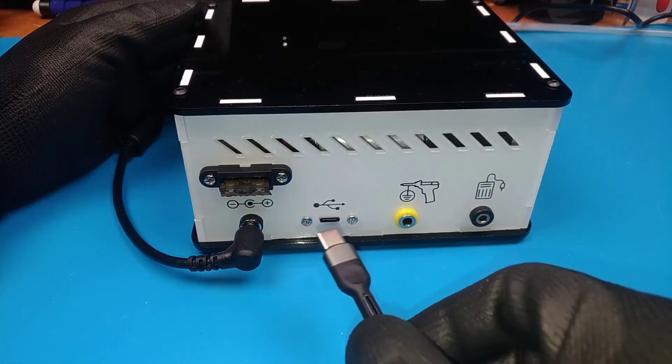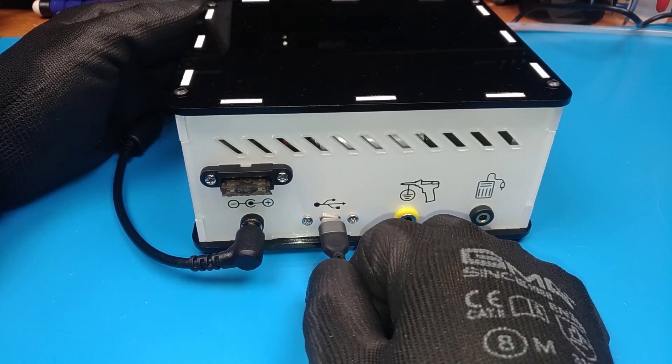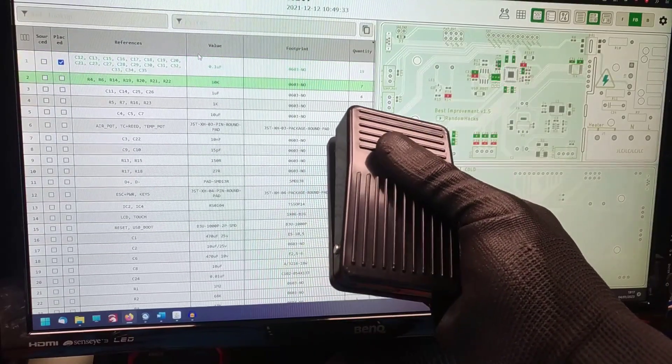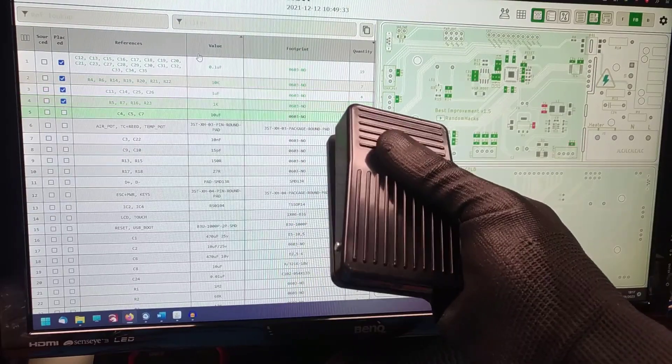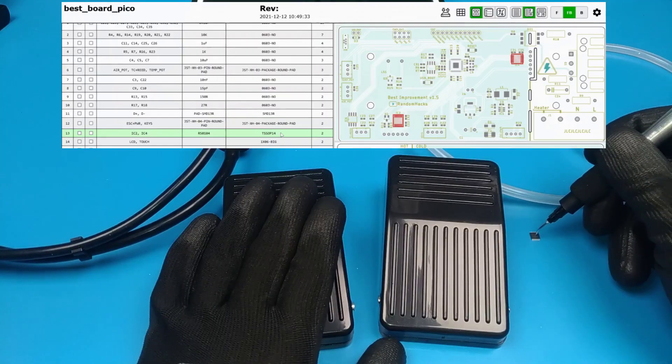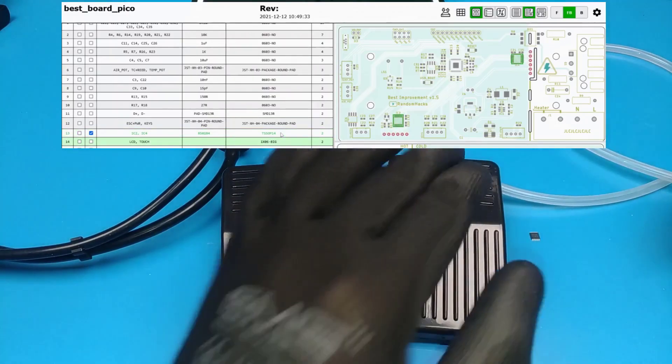With the USB port you can apply future firmware updates or send a command to interactive HTML BOM to tick the place checkbox and highlight the next component. For this you can use an additional footswitch or make your own wired button.